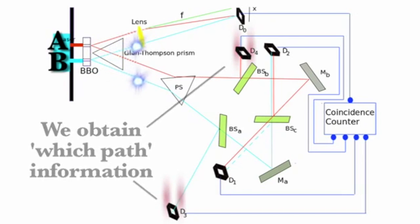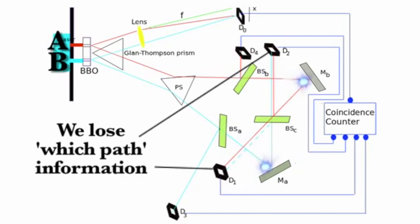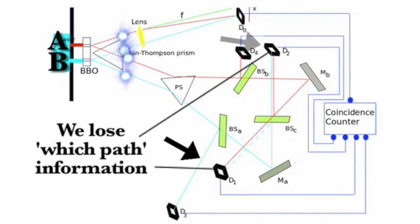Now if the photon randomly passes through BSA or BSB, it will either bounce off here or here, and it has a 50-50 chance of passing through BSC, or bouncing off of it. So if the photon passes through BSA or BSB, we lose the path information.